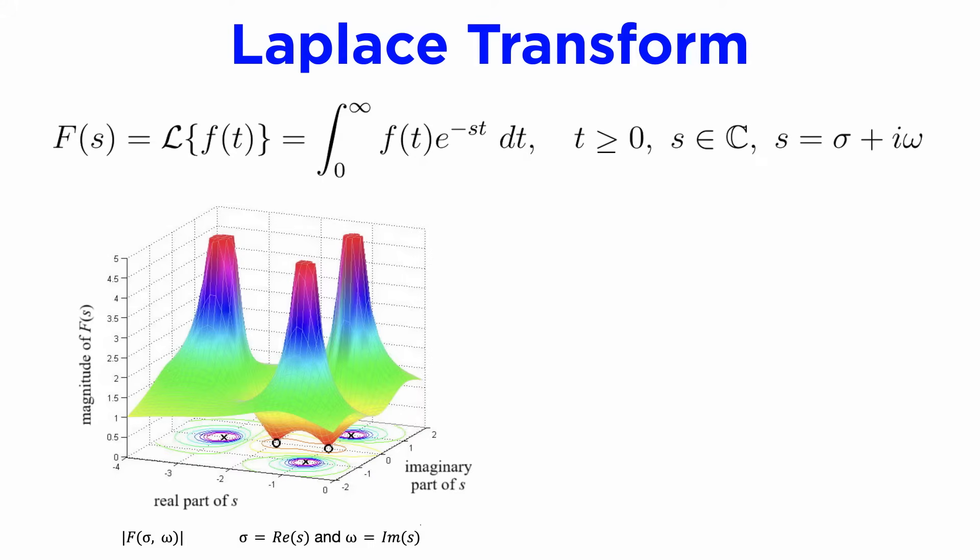We can represent the magnitude of the Laplace transform as a multivariable function on axes of the real part of s, sigma, and the imaginary part of s omega.